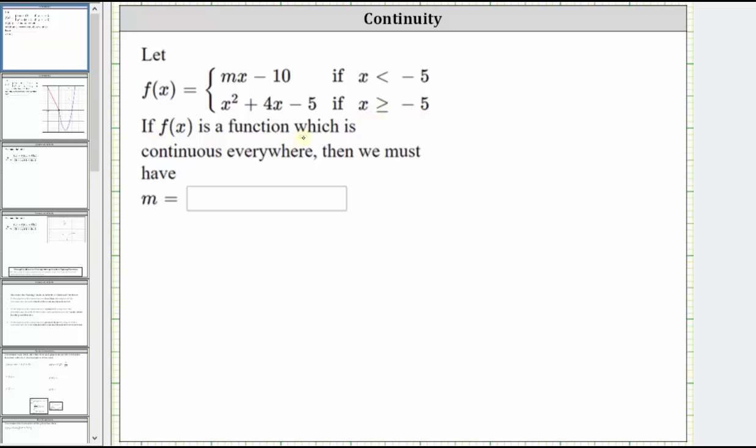If f of x is a function which is continuous everywhere, meaning we can sketch the function on the coordinate plane without lifting up a pencil, then we must have m equals what value?